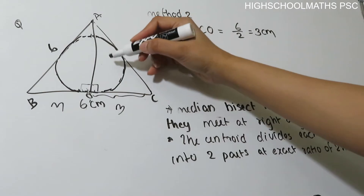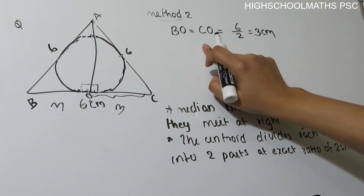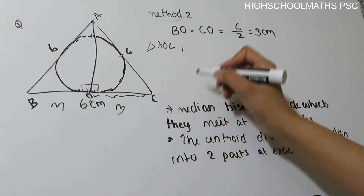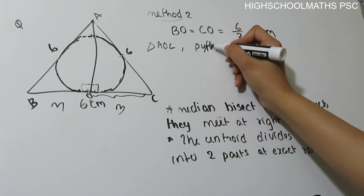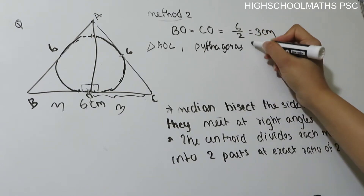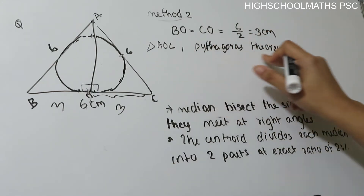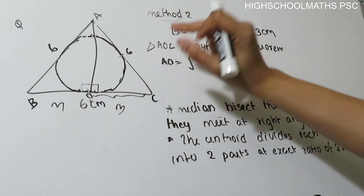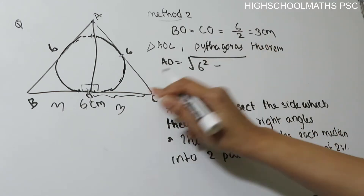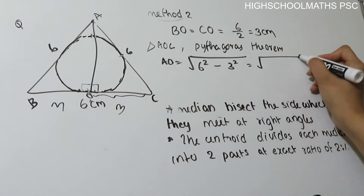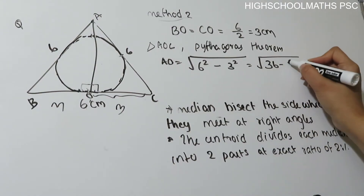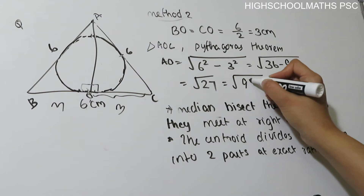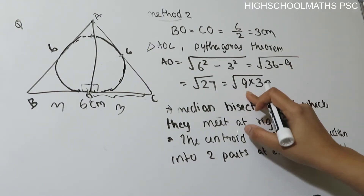Now we consider a right angle triangle AOC. We consider the right angle triangle AOC. What we use is the Pythagorean theorem. By using the Pythagorean theorem, the median AO is equal to the square root of AC² minus OC².